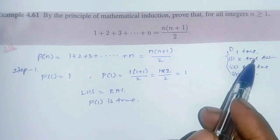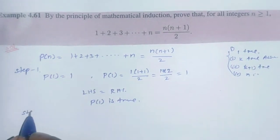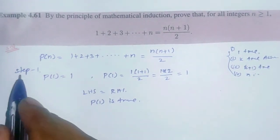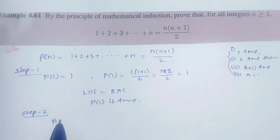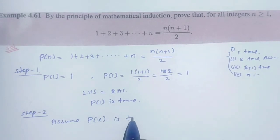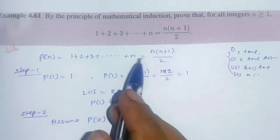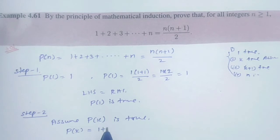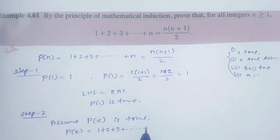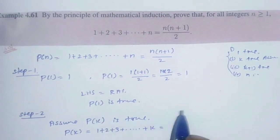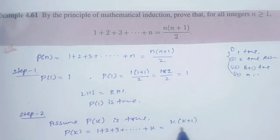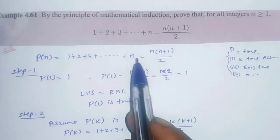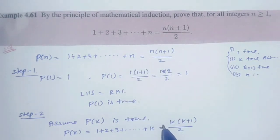Step 2: Assume P(k) is true. We assume P(k) is true, meaning 1+2+3+...+k = k(k+1)/2. We substitute k into the formula.